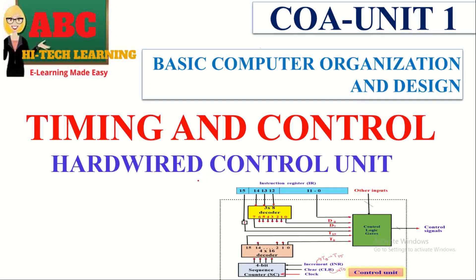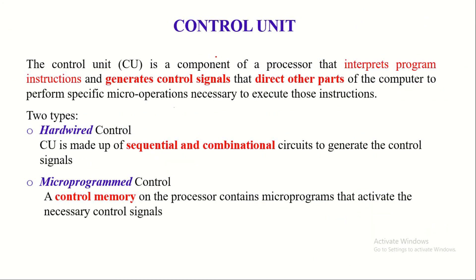Hello viewers. In this video we are going to learn about the Hardwired Control Unit and how timing and control signals are generated by a Hardwired Control Unit. The control unit is one of the important components of a processor that interprets program instructions read from memory and generates control signals in order to direct other parts of the computer to perform specific micro-operations required to execute those instructions.